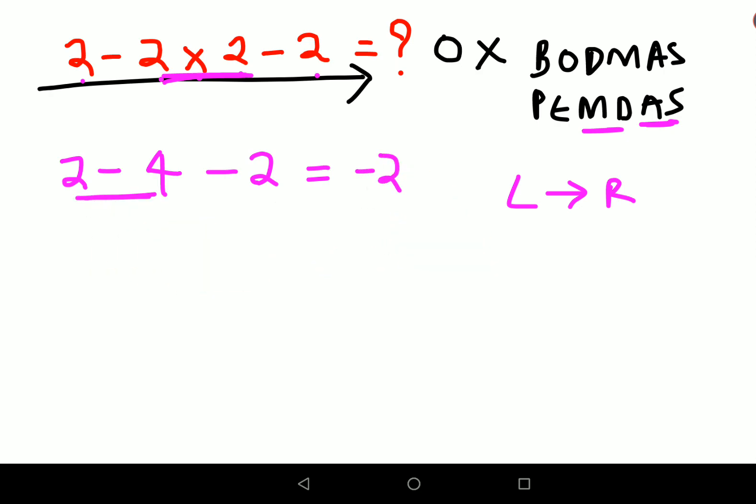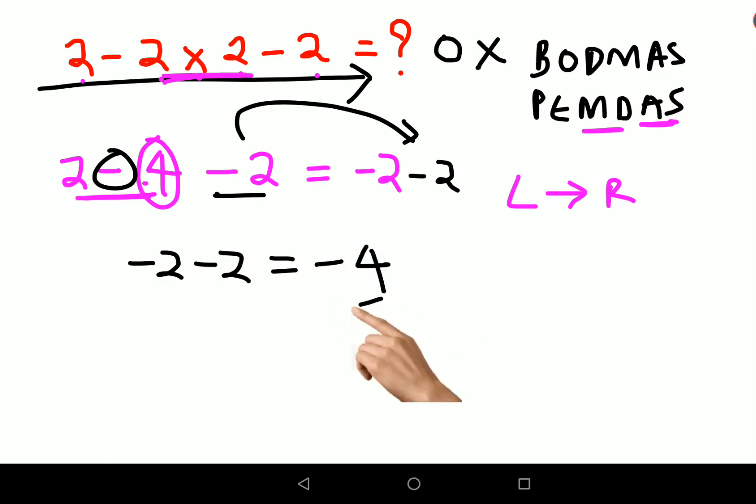Sorry, 2 minus 4 will get you minus 2 because 4 is the bigger number and the sign which 4 carries is minus. So you will have minus 2, and then this minus 2 will be written as it is. So minus 2 minus 2, when you have two minuses, the operation done is plus but the sign carried is the negative sign. So you have minus 4. Minus 4 is the answer for this one.